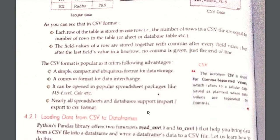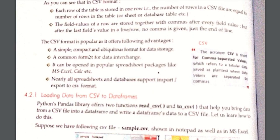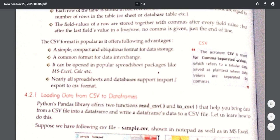The advantages of CSV format are: it is a simple and compact format, and ubiquitous — meaning it is a universal and very popular format. You can use it for data storage. It is a common format for data interchange. It can be opened in popular spreadsheet packages like MS Excel or Calc. Nearly all spreadsheets and databases support import and export to CSV format. The acronym CSV stands for Comma Separated Values.